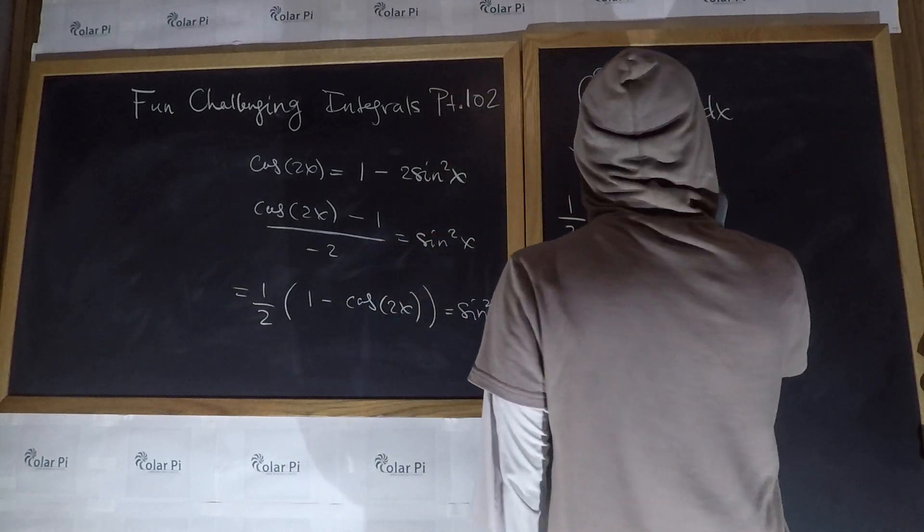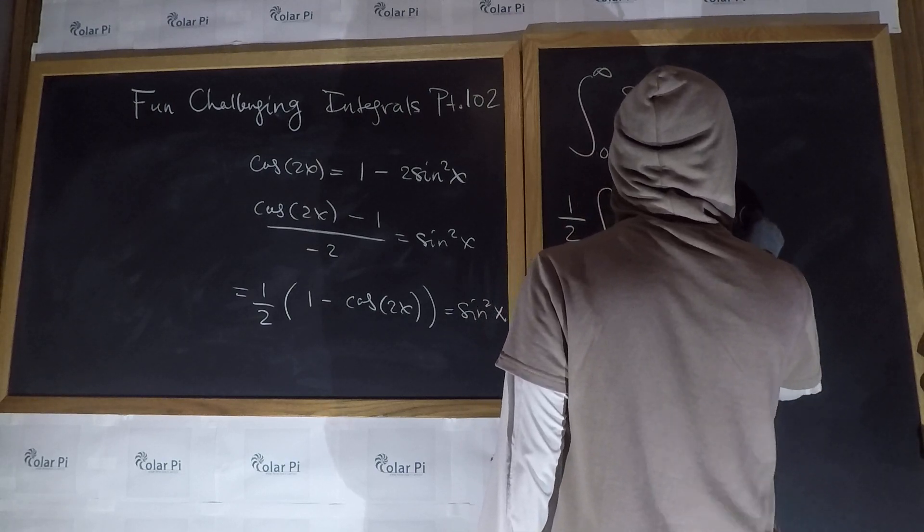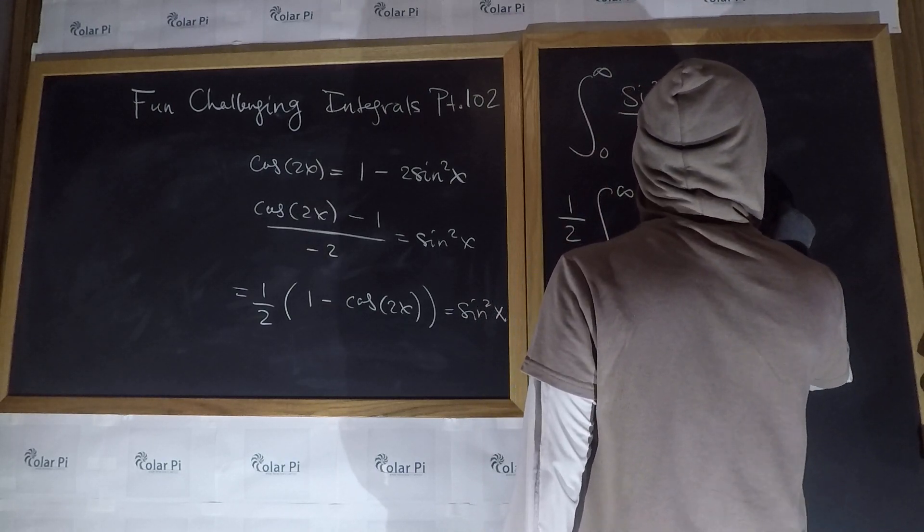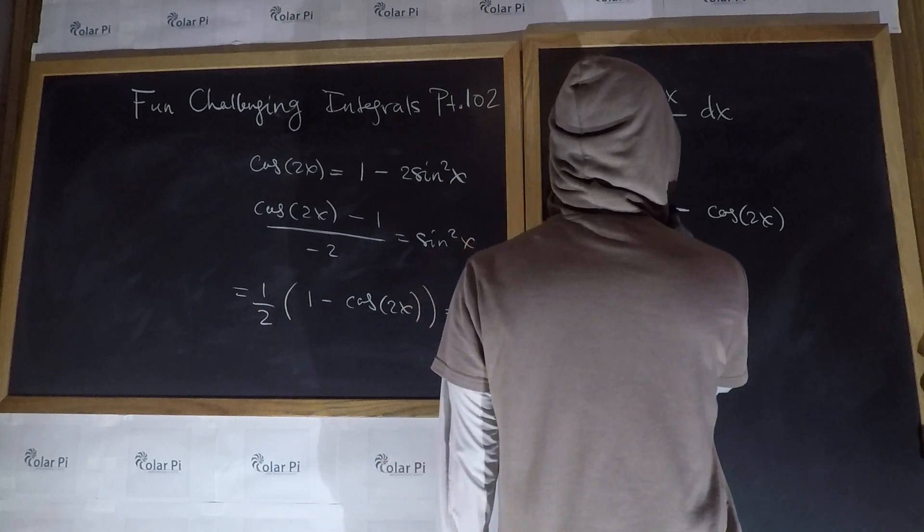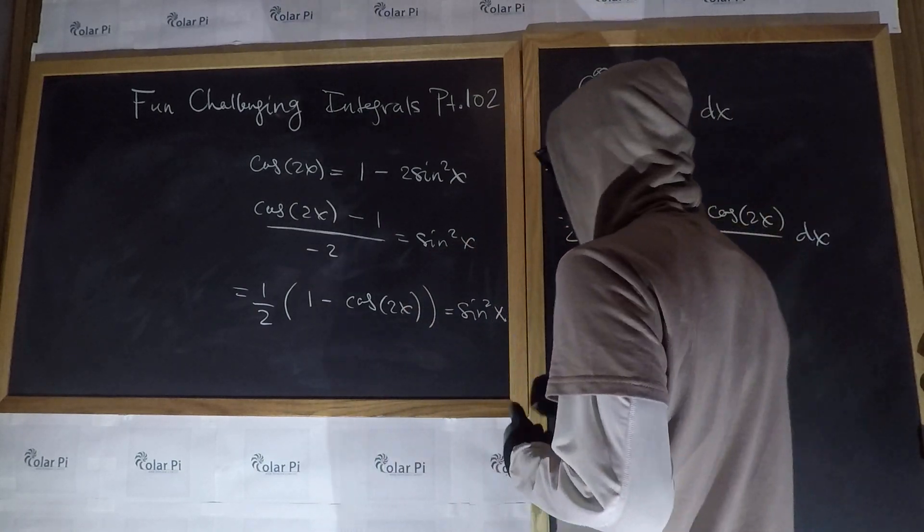And then, we could go 0 to infinity. And then, now, we have 1 minus, 1 minus cosine 2x. Right? And, of course, over x squared dx. Yeah?